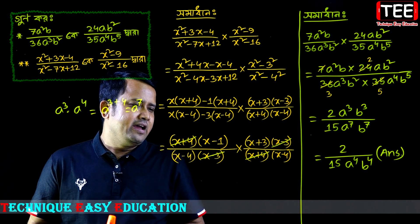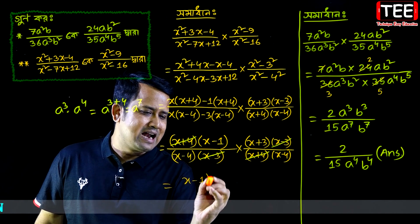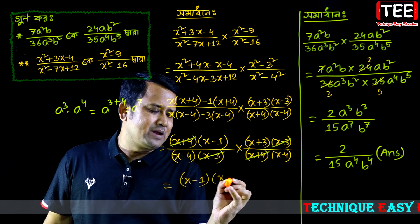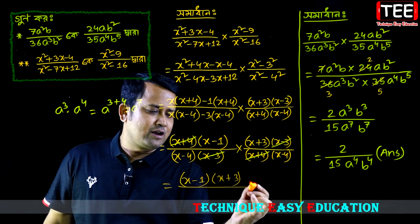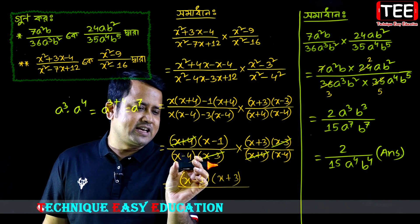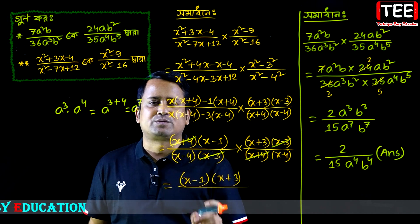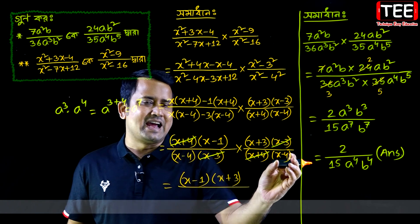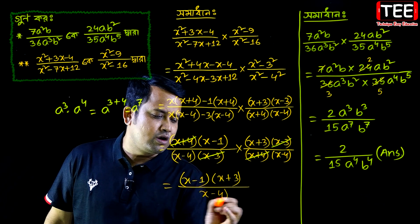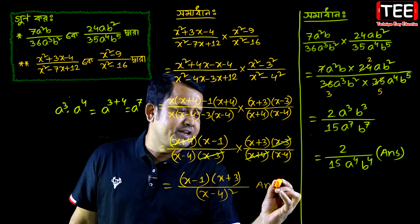And we will see that x minus 1, x plus 3, and x minus 3, x minus 4, x minus 4 — x minus 4 squared and so on. 9 goes.